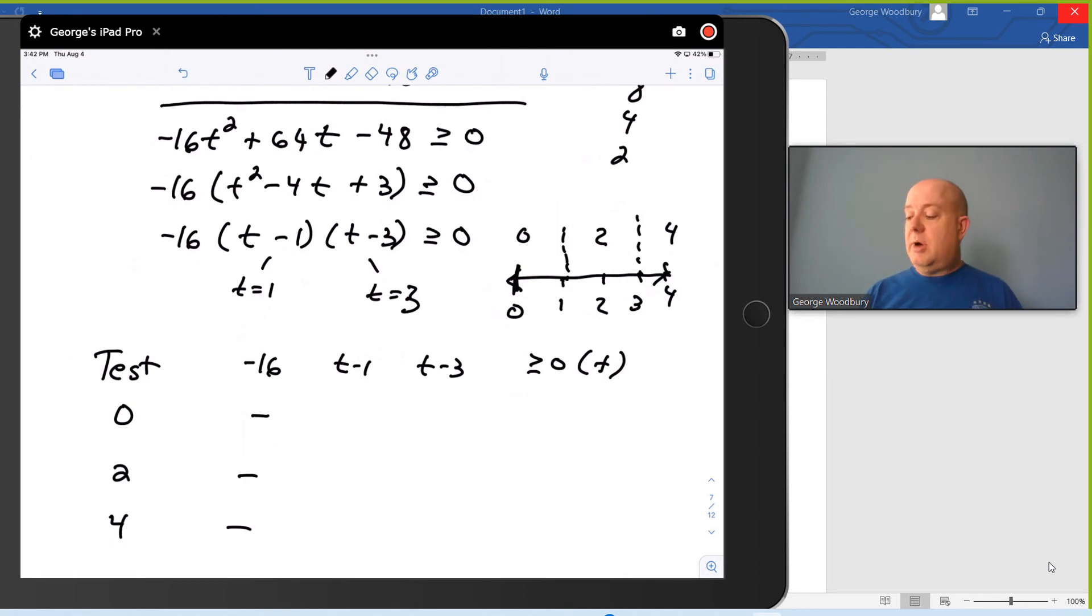Now for 0, 0 minus 1 is negative. 0 minus 3 is negative. The product of three negatives is negative. That means that zero is not a solution.